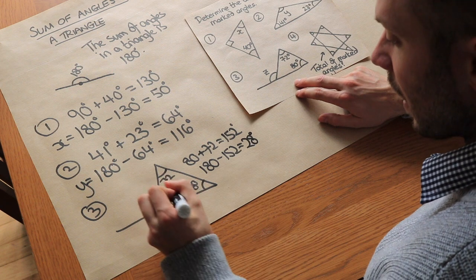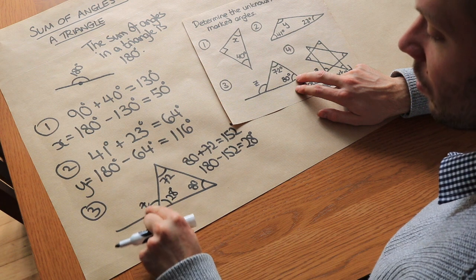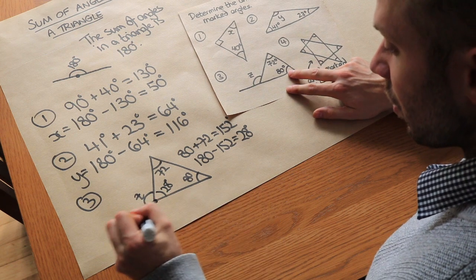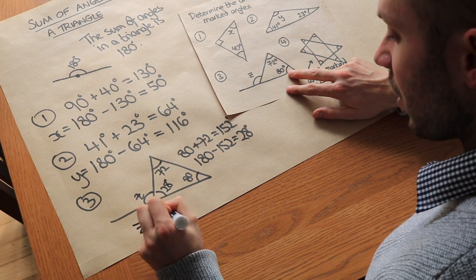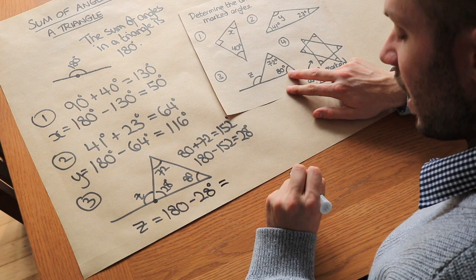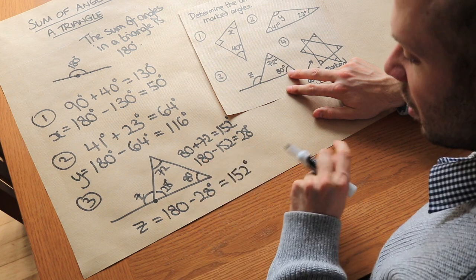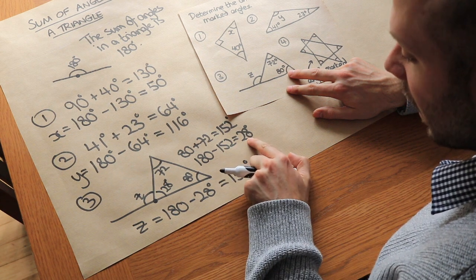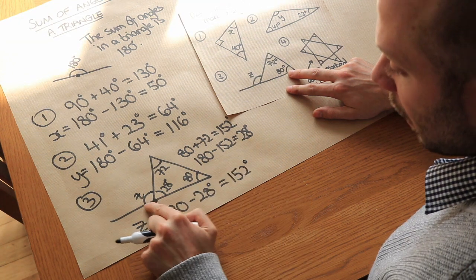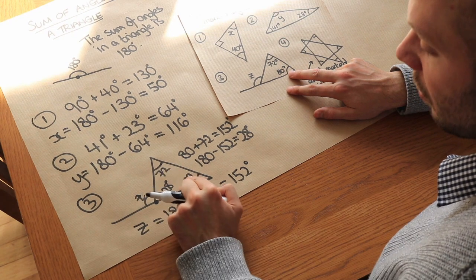So that angle there is 28 and now we can work out z because we know the angles on a straight line around a point add to 180 degrees. So we just need to do z is 180 minus 28 degrees which is equal to 152 degrees. And by the way do you notice that we did 180 minus 152 to get 28 and then 180 minus 28 to get back to 152. And basically we find that this angle here z is the sum of those two other interior angles of the triangle.